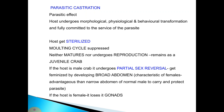The broad abdomen is a characteristic feature of females and is advantageous over the narrow abdomen of a normal female for carrying and protecting the parasite. So the narrow abdomen is changed into a broad abdomen. If the host is female, it loses its gonads.